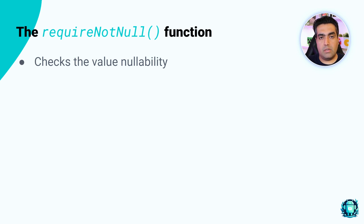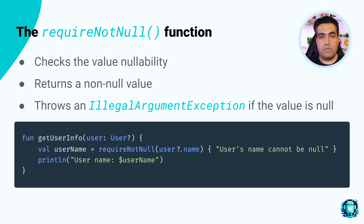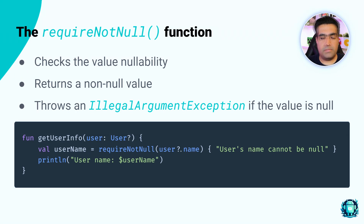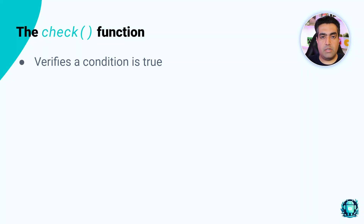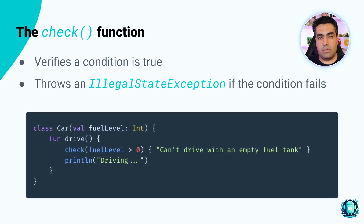requireNotNull works the same as require but checks the value's nullability, returns a non-null value, and throws an IllegalArgumentException with the specified message. In this example, requireNotNull ensures that the user's name is not null. The check function verifies that a condition is true; if it fails, it throws an IllegalStateException with the provided message. In this example, the Car class's drive function checks if the fuel level is greater than zero before execution.